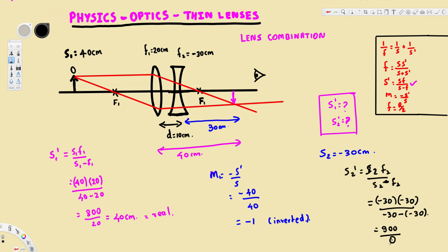With the denominator equal to zero, 900 divided by zero gives us infinity. This means the second image does not form due to the diverging lens. The rays become parallel to each other and do not meet, so no image is formed for the second lens. That's how we solve this kind of problem.